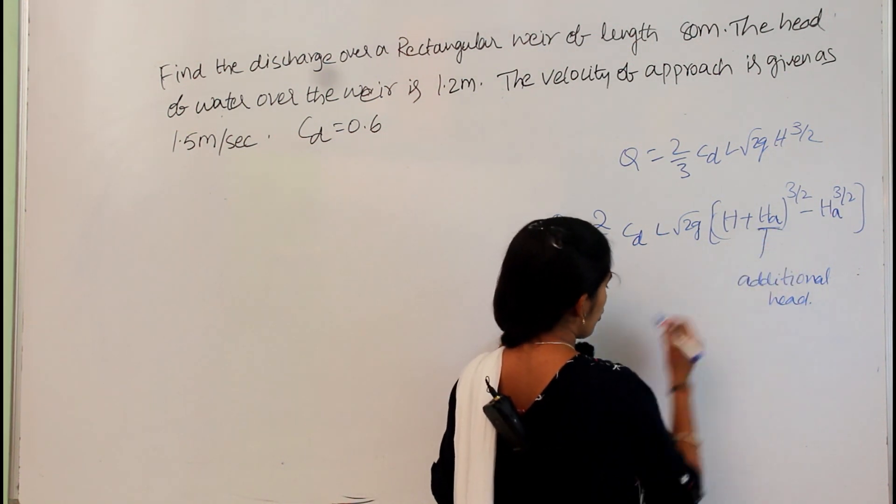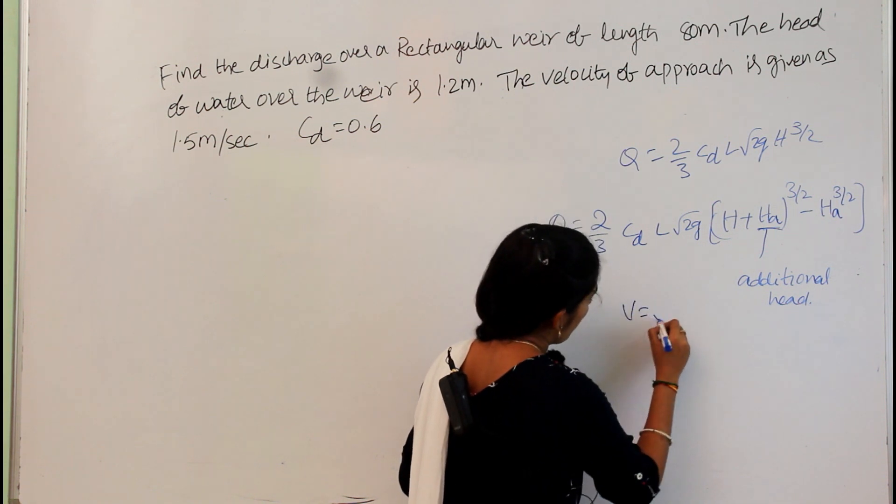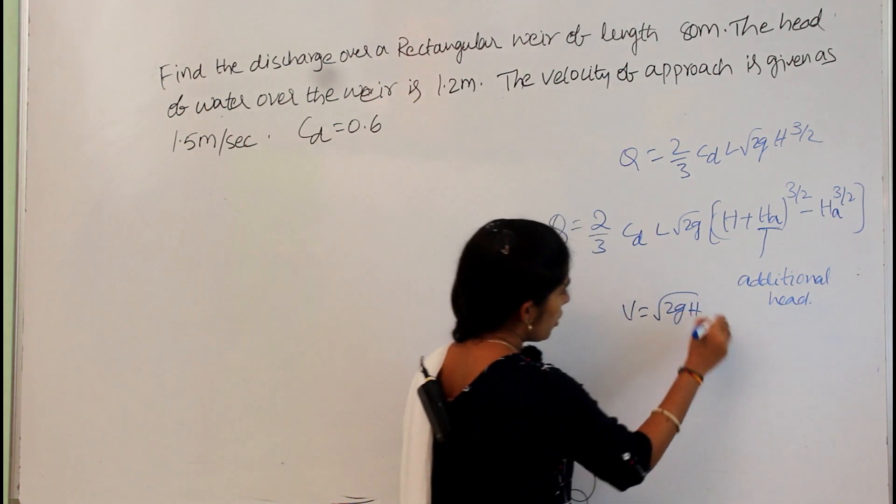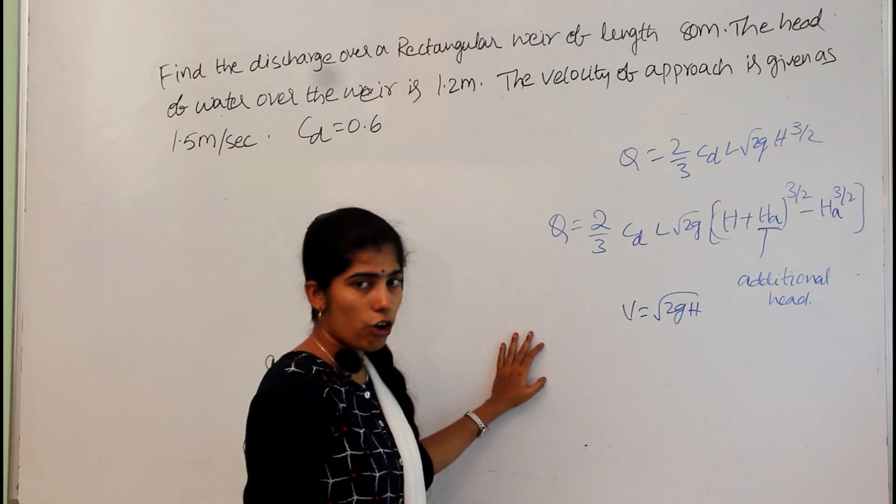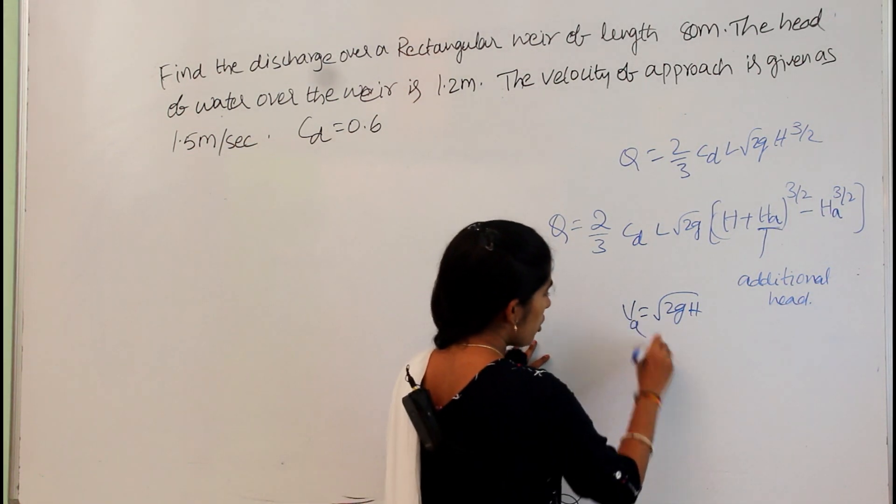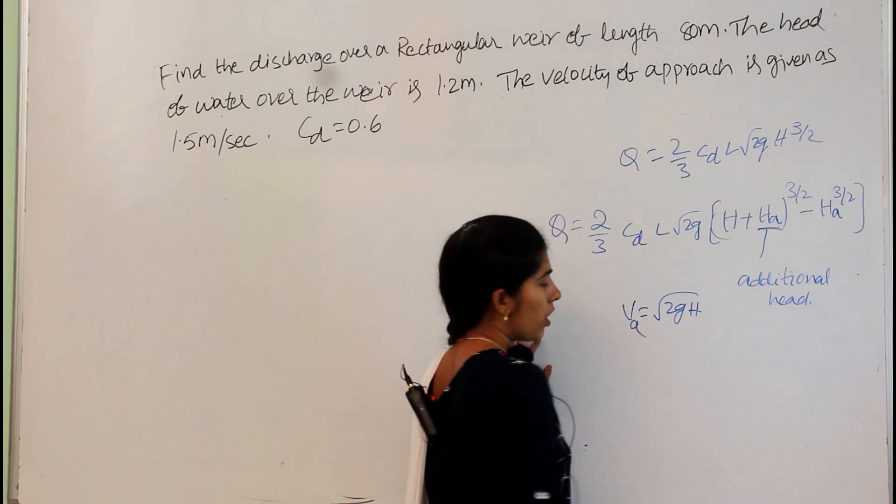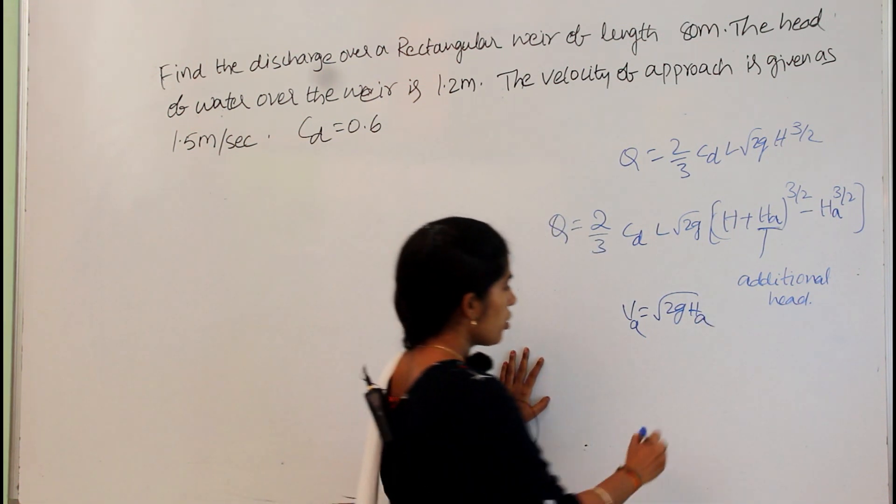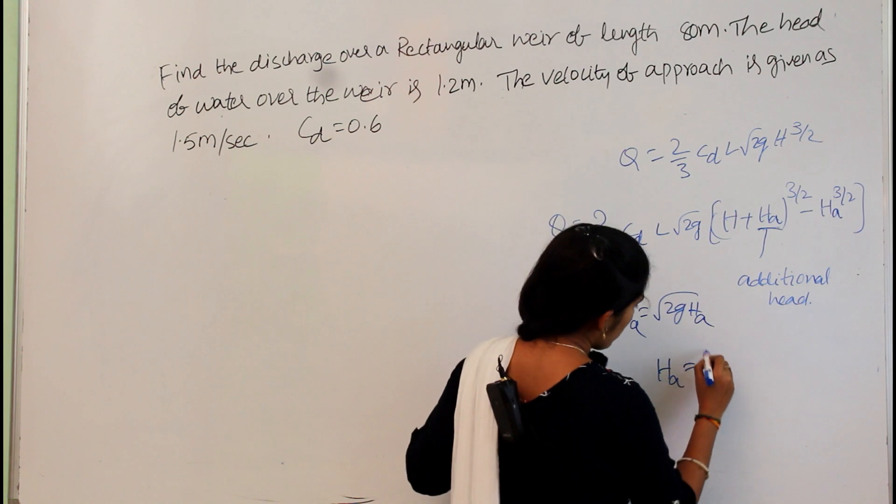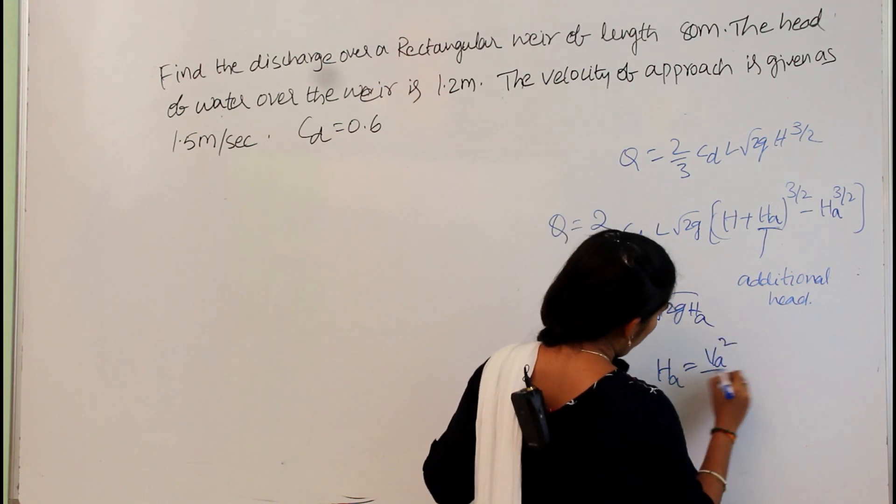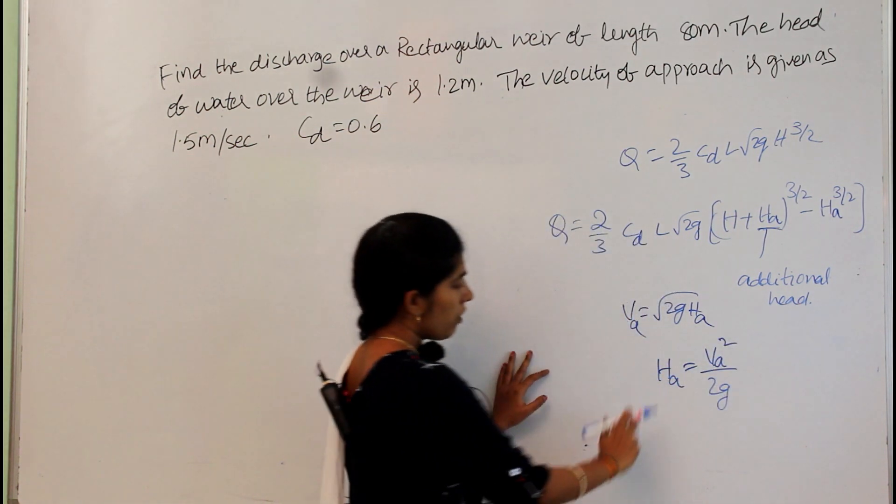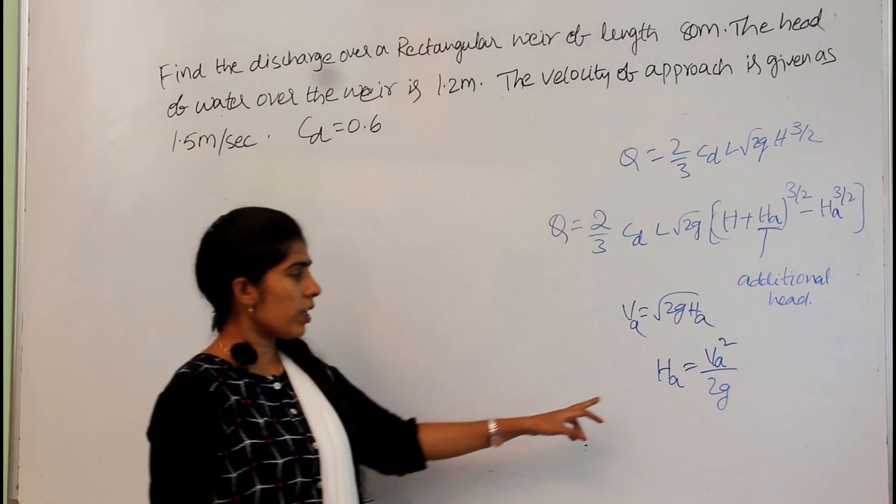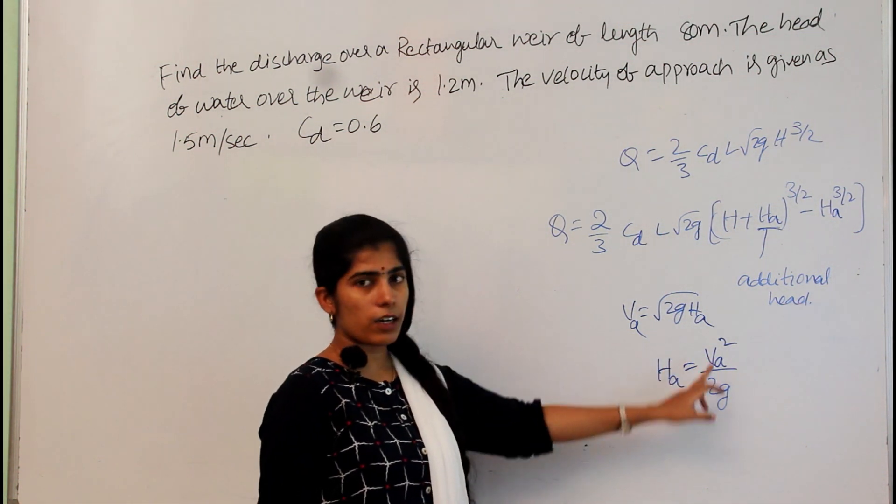How to calculate this ha? This is v equal to root 2g ha. This is the basic equation we already know. In this velocity approach I am taking va. Then the head provided is ha. So ha equal to va square by 2g. If they do not give the ha value and only give the velocity, then we can calculate from this one.